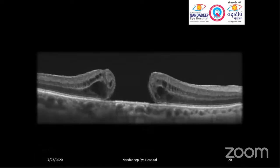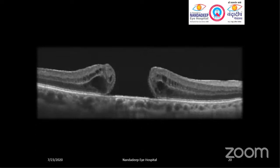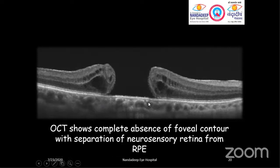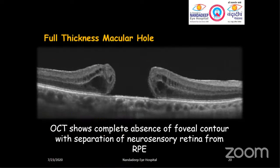This is a very common picture encountered in diagnostic clinics. Here there is complete absence of foveal contour — this area is totally separated. At the same time, there are cystic spaces and complete separation of the neurosensory retina. The retina consists of two broad layers: the retinal pigment epithelium (the last extension of the choroid) and the neurosensory retina, which consists of nine layers. The entire neurosensory retina has been completely separated — only the RPE is intact. The OCT reveals complete absence of foveal contour with separation of neurosensory retina from the RPE. You see this kind of case in patients with full thickness macular hole.